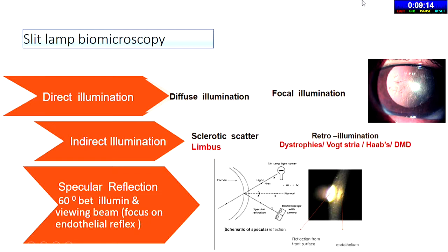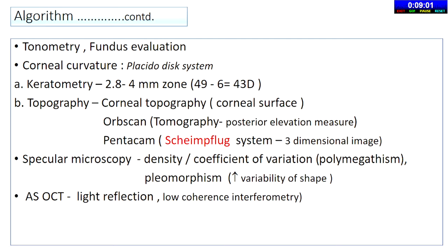Out of the slit lamp techniques, focal and diffuse are most important, then go for specular. Due to shortage of time, if there are problems with corneal opacities, go for retroillumination. In the algorithm, even in a cornea case, always do tonometry — don't think it's not required just because it's not a glaucoma case. Herpes or corneal opacities and PKs often need tonometry.